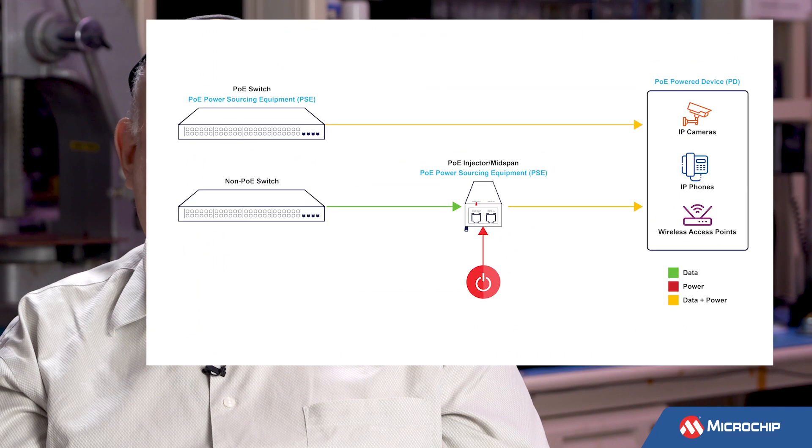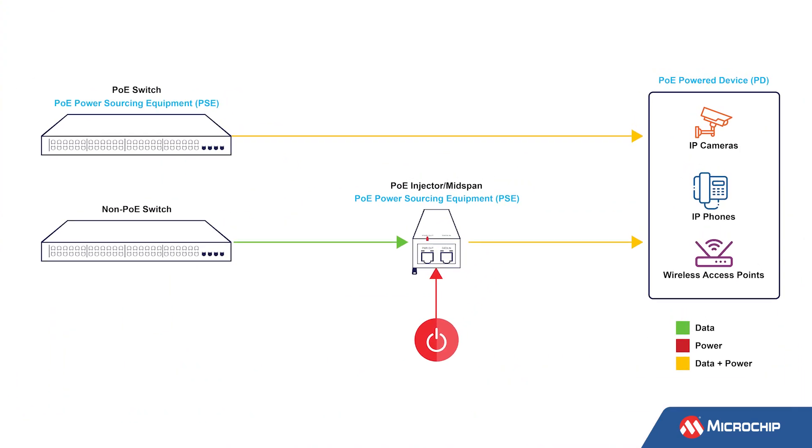and then outputs a new Ethernet cable that has power and data on it — it injects the power onto that cable. Mid-spans are very important because only 20% of the existing installed switches can provide power.